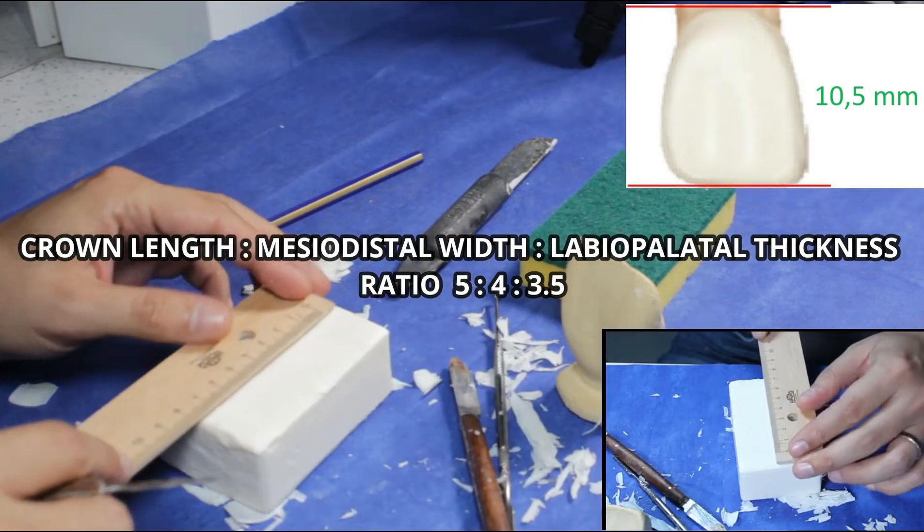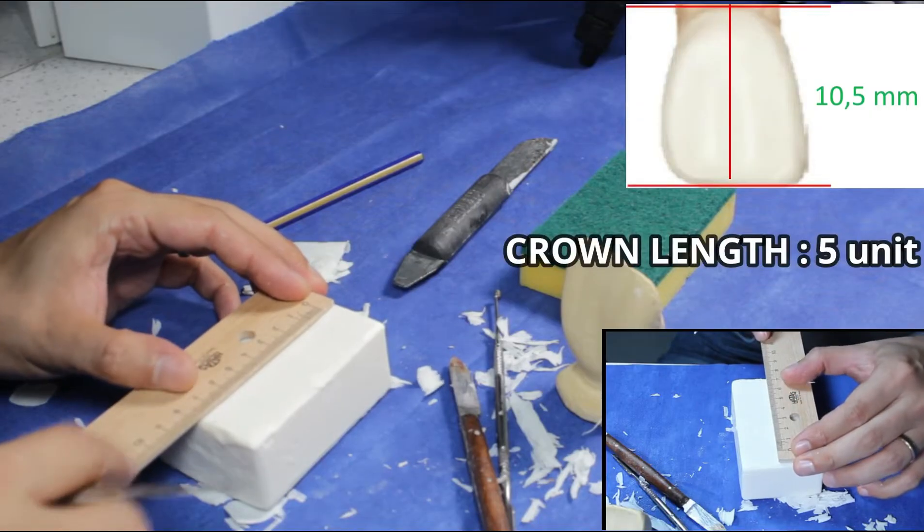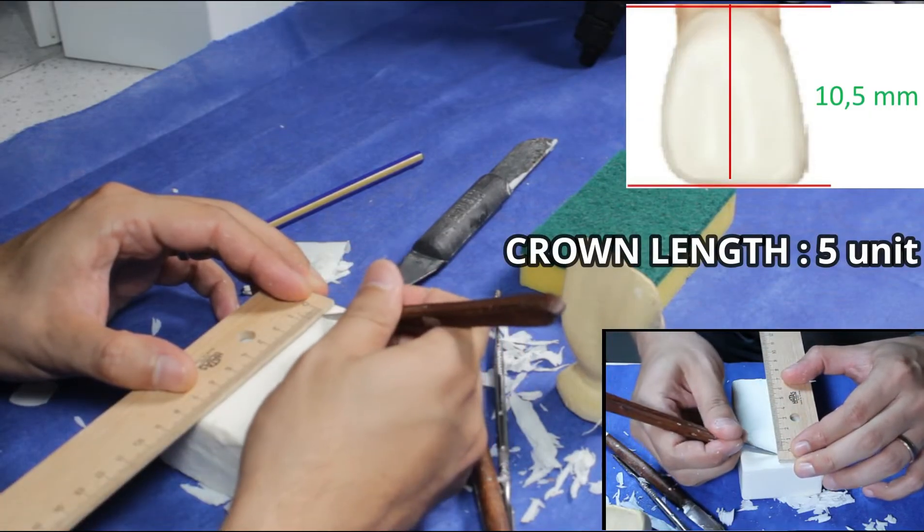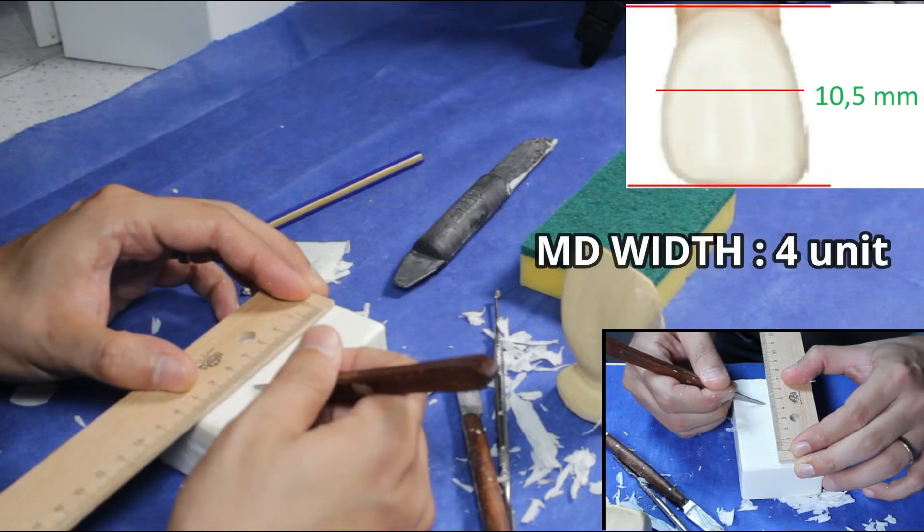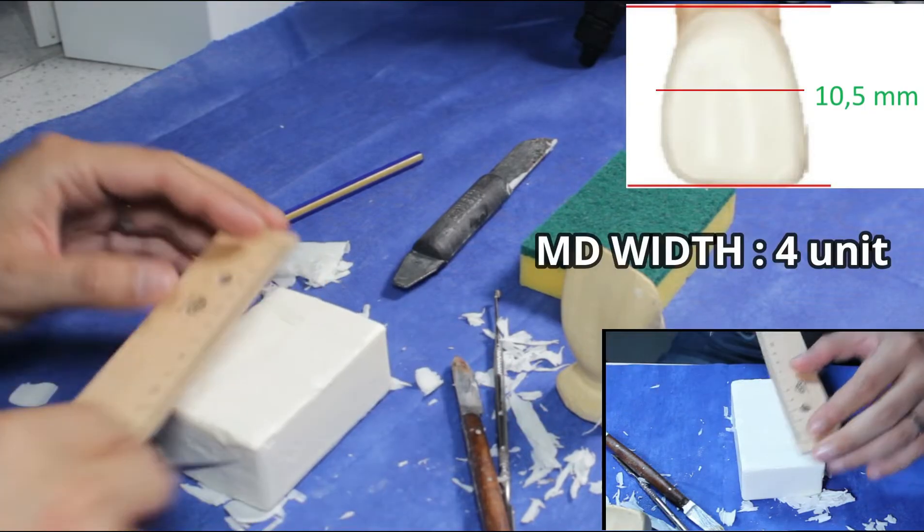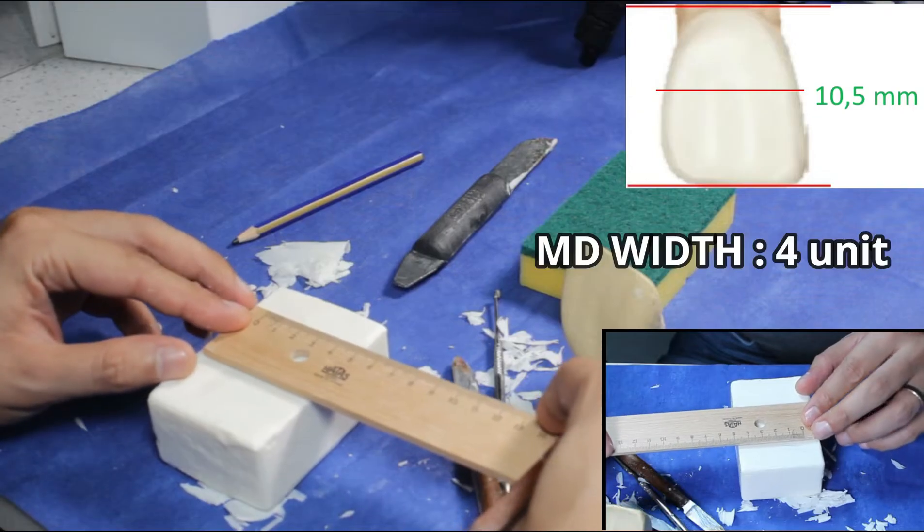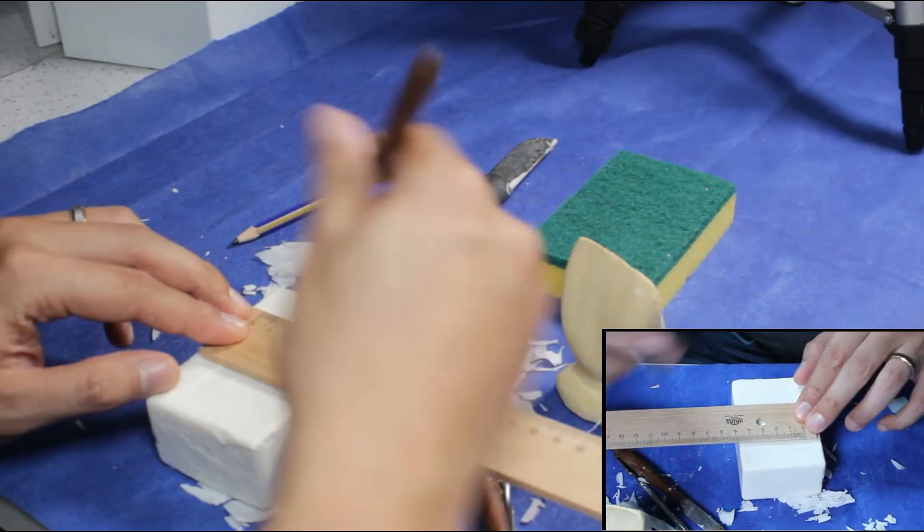If crown length is 5 units, mesial-distal width should be 4 units and the labial-palatal thickness should be 3.5 units. For the first try, you can also mark each side as labial, mesial, distal to prevent confusion.